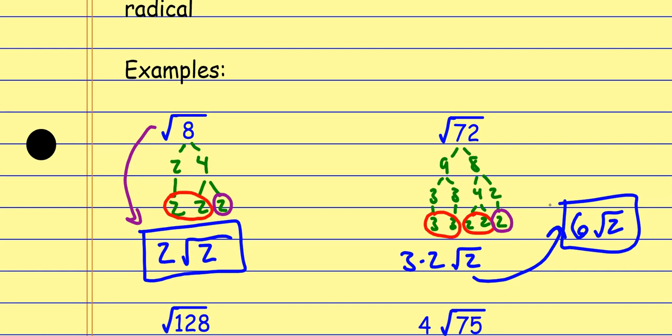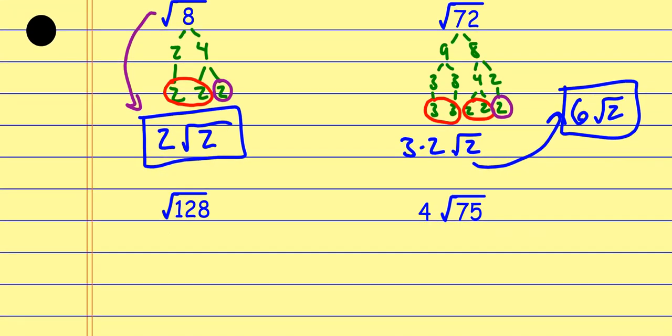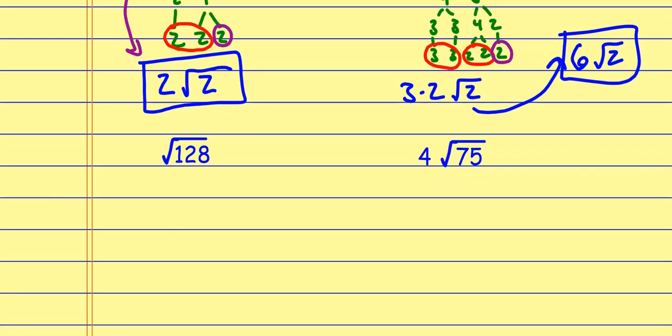What's happening is that three times three is three squared — the square and square root cancel, leaving just a 3. The pair of twos is like two squared — the square and square root cancel, leaving a 2 on the outside. Anything I couldn't take the square root of stays on the inside.